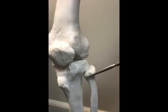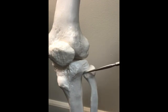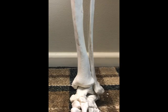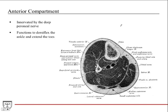The proximal tibiofibular joint is a plane-type synovial joint formed by the head of the fibula articulating with the tibia, allowing very little gliding movement. Distally, the distal tibiofibular joint between the tibia and fibula is a fibrous joint. Now we will talk about the muscles in the leg region. Just like all other parts of the extremities, the leg is composed of muscular compartments, each with a general action and general innervation.